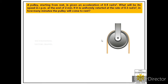We are given that the pulley has started from rest, which means the initial angular velocity omega naught is zero. It is given an acceleration of 0.5 radian per second square, so alpha is 0.5 radian per second square.